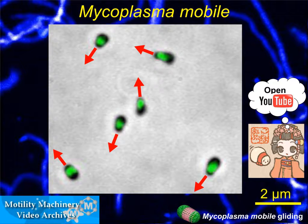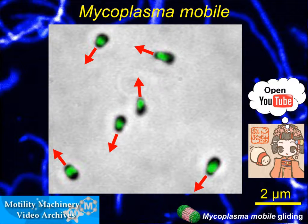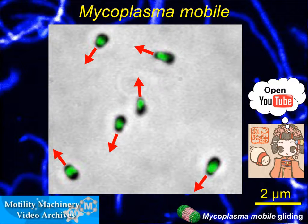Mycoplasma is a group of tiny pathogenic bacteria which lack a peptidoglycan layer. Some species, including Mycoplasma pneumoniae and Mycoplasma mobile, form a protrusion at a cell pole, bind to a solid surface, and glide in the direction of the protrusion, as shown by the red arrows.